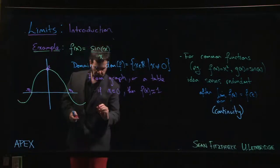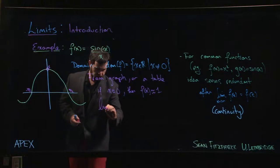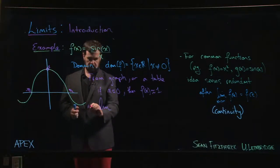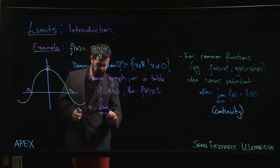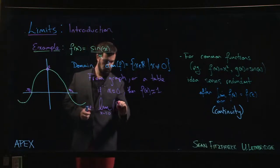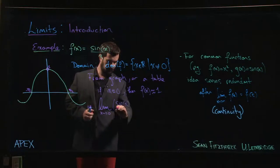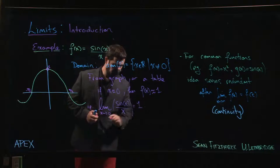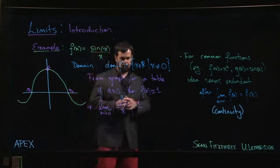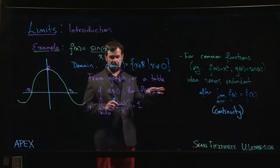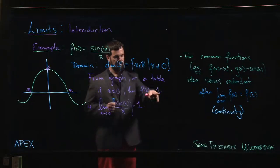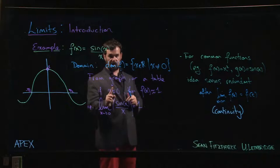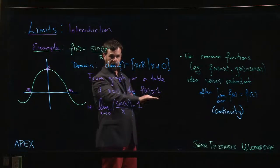When you state this in terms of a limit, you're saying something a little bit stronger. So when you say that the limit as x goes to zero of sine x over x, when you say that that limit is 1, you are saying this, but you're saying a little bit more. What you're saying is not only is this close to 1 when x is close to zero, but the closer x gets to zero, the closer this will get to 1.